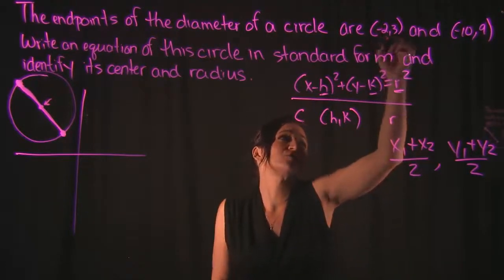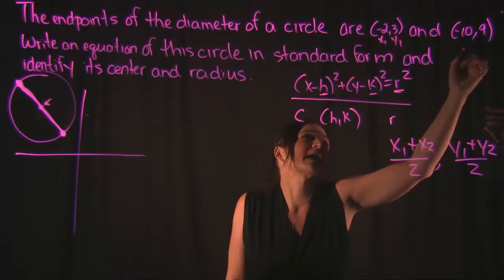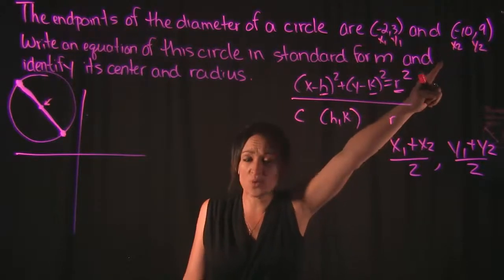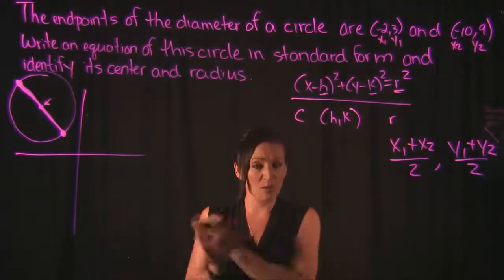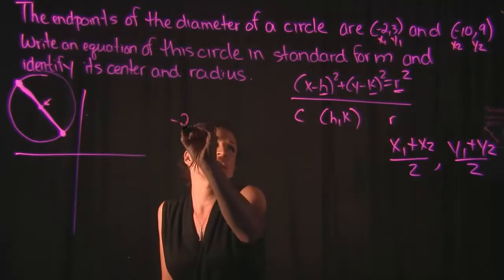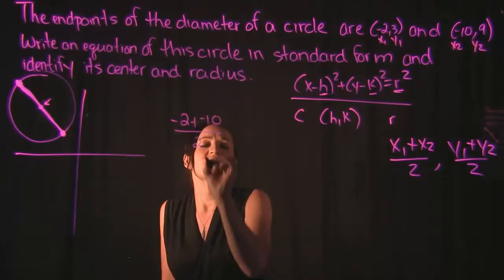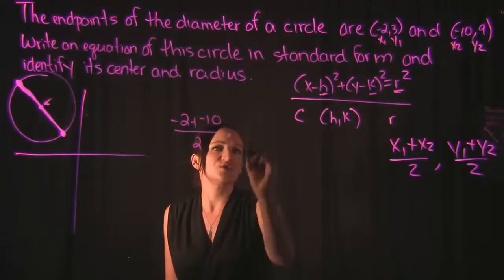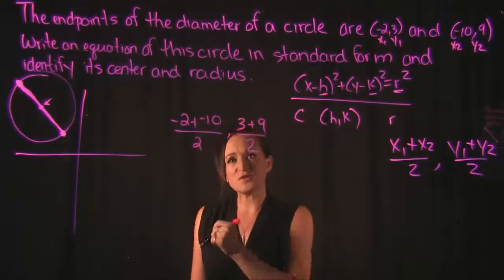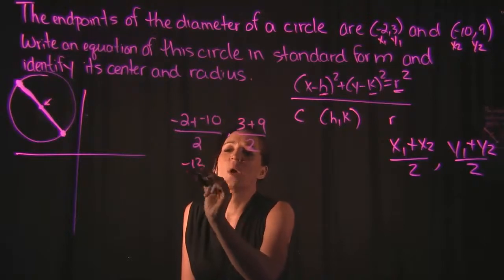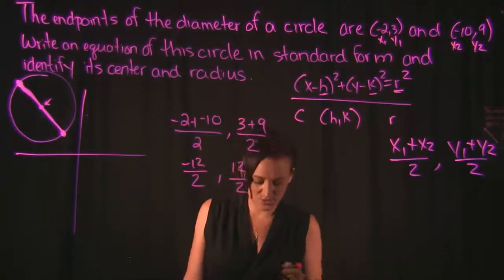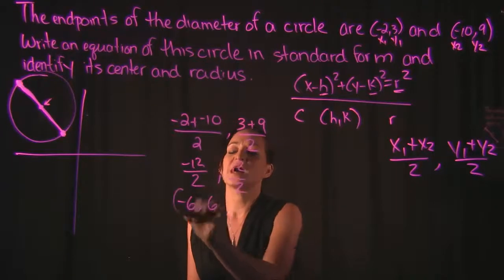I'm going to say negative 2, 3 is x1, y1 and negative 10, 9 is x2, y2. I could have flip-flopped them — it doesn't make a difference. Just label one pair 1 and the other 2 and plug them in. So x1 plus x2 is negative 2 plus negative 10, divided by 2. For y1 plus y2, that's 3 plus 9, divided by 2.